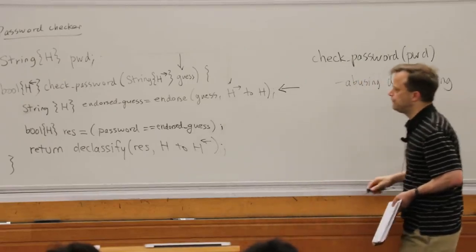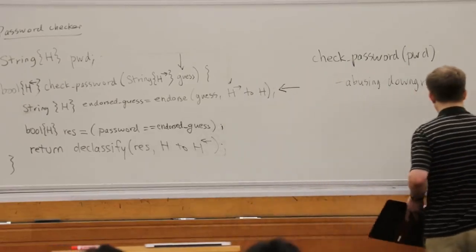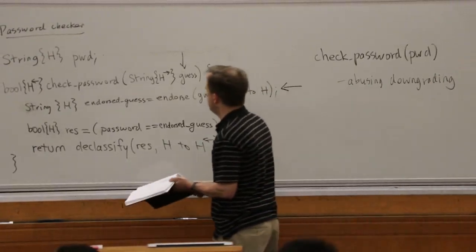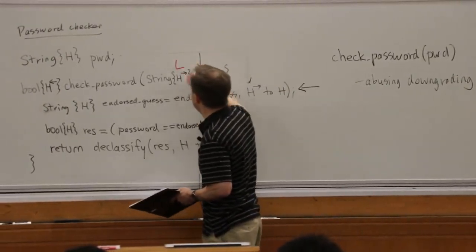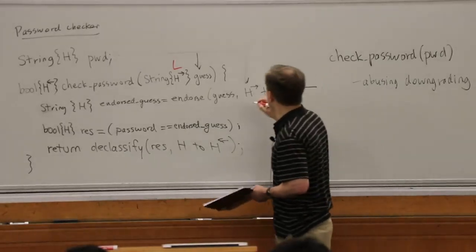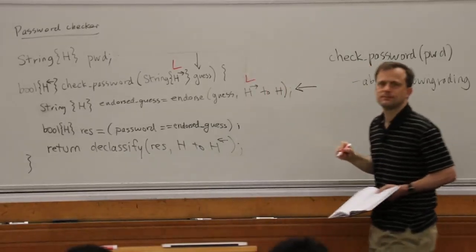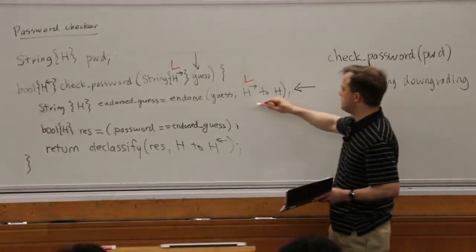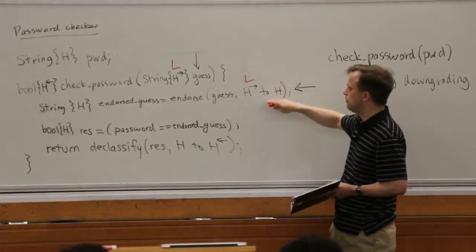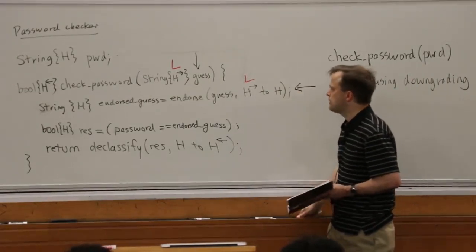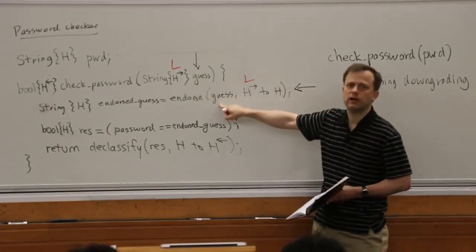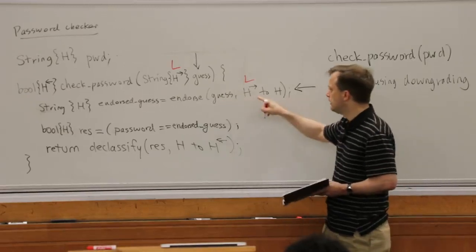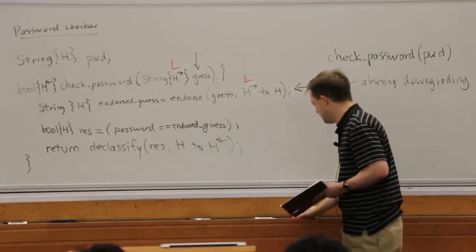The way to fix this is to change the signature of this function so that the guess is not secret, and then we're going to endorse it from L to H. Once we do that, we'll have a secure program. But the question is what we were doing wrong in checking endorse. We need to update our typing rule for endorse so that it doesn't allow the old version.